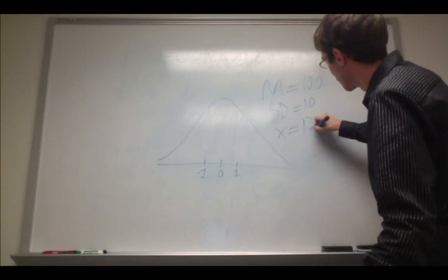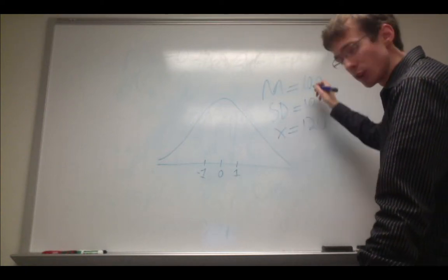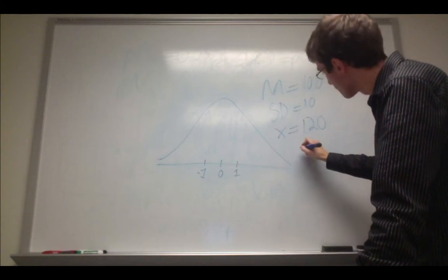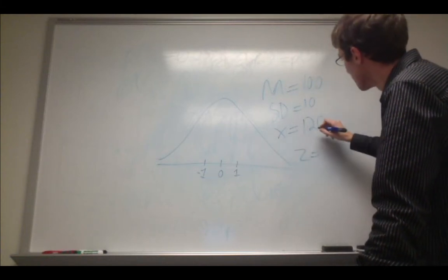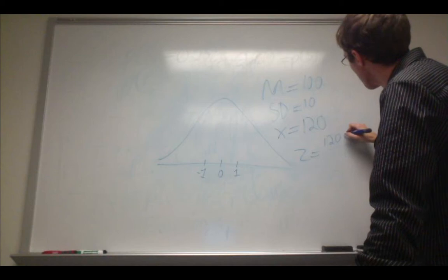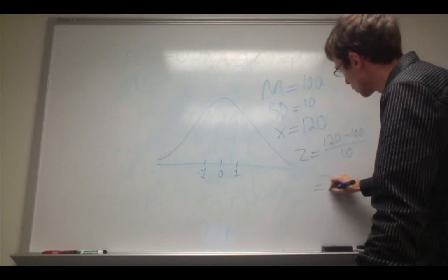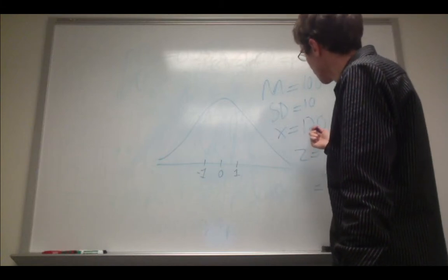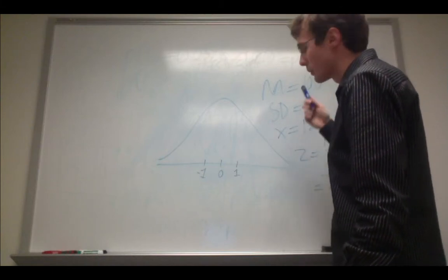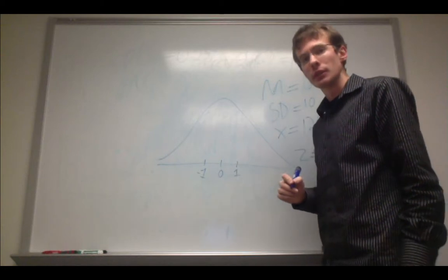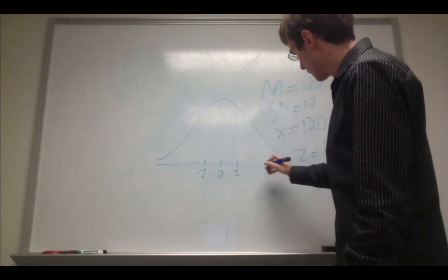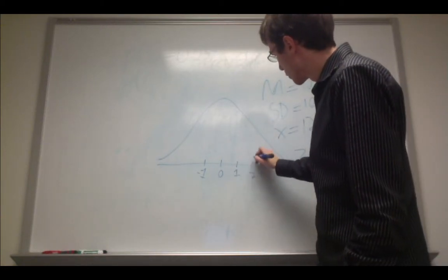So x is going to be 120, and we first convert this to a z-score. It's going to be 120 minus 100 divided by 10, which is 2. So that gives us this score, how far it is away from the mean in terms of standard deviations. It's going to be at a z-score of 2 right here.